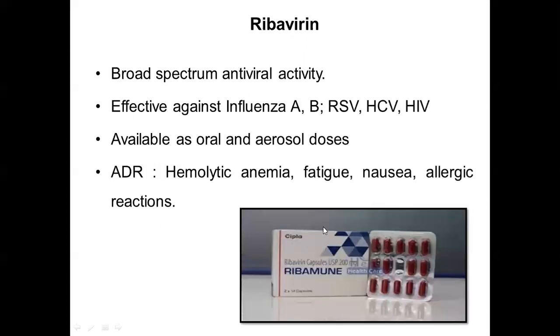Ribavirin is a broad-spectrum antiviral drug effective against influenza A and B, respiratory syncytial virus, HCV, and HIV. It is available as oral as well as aerosol doses. ADRs include hemolytic anemia, fatigue, nausea, and allergic reactions. With that we have completed the anti-influenza drugs — amantadine, rimantadine, oseltamivir, zanamivir, and ribavirin. For this topic, mainly remember the examples of anti-herpes drugs and anti-influenza drugs. Concentrate on acyclovir for short notes among anti-herpes drugs, and oseltamivir or the neuraminidase inhibitors — oseltamivir and zanamivir — for short notes on anti-influenza drugs.